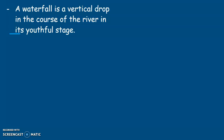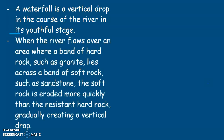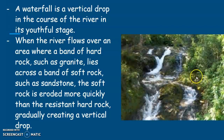A waterfall is a vertical drop in the course of a river in its youthful stage. When the river flows over an area where a band of hard rock such as granite lies across a band of soft rock such as sandstone, the soft rock is eroded more quickly than the resistant hard rock, gradually creating a vertical drop. The soft rock has been eroded away, leaving the hard rock behind, which is eroded much more slowly.